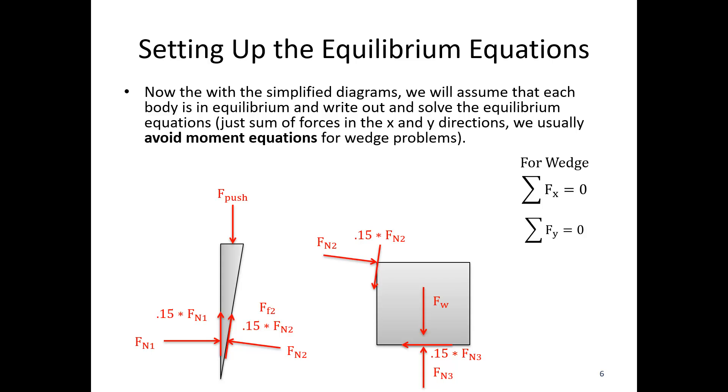For the wedge, we have sum of forces in the x and sum of forces in the y. For the safe, we also have sum of forces in the x and sum of forces in the y. Two separate bodies, two equations for each, that would let us solve for up to four unknowns. Assuming I know the weight of the safe, I have normal forces three, two, and one, and the pushing force. So I have exactly enough equations to solve for the four unknowns.